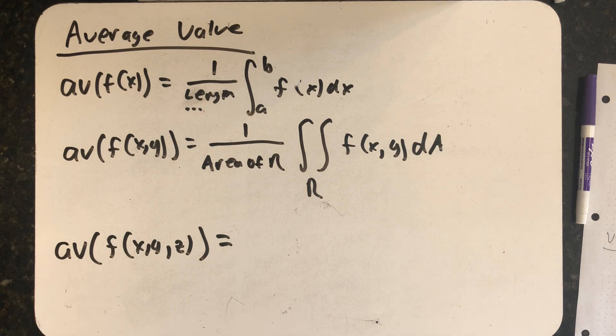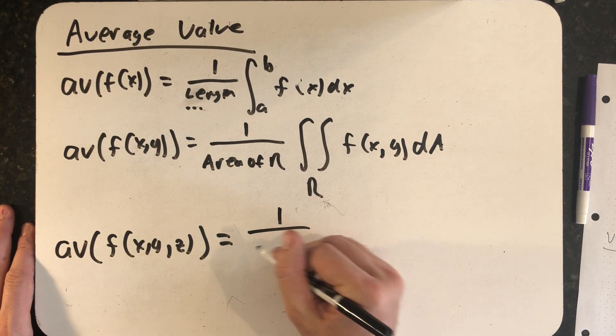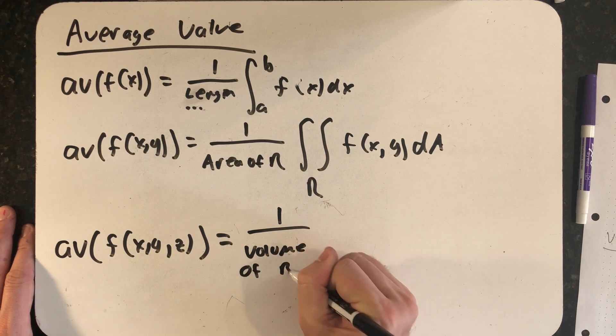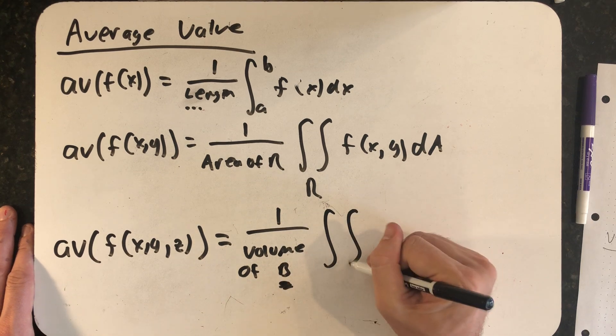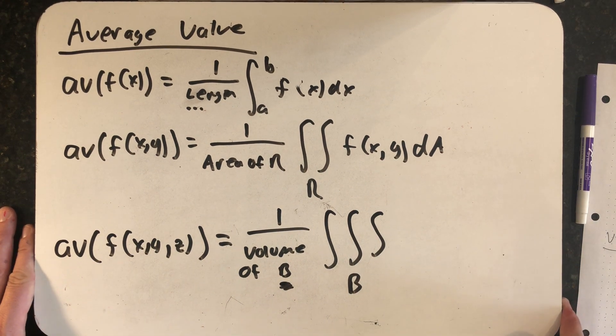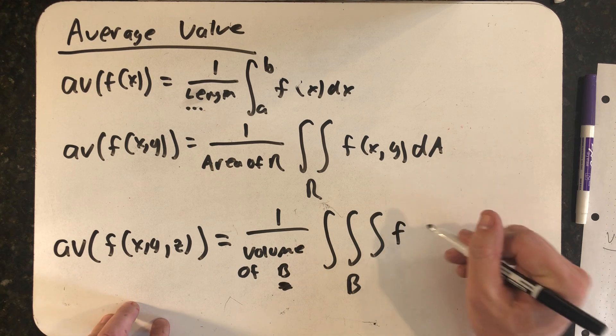I have a feeling you wrote this down. Now you might not have called it B, but I've been calling the regions in space B. Your textbook, if you're taking this course at Alamance Community College, uses I think capital D to define these regions in space.